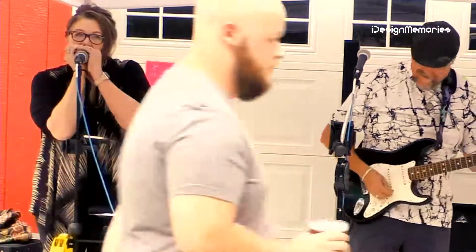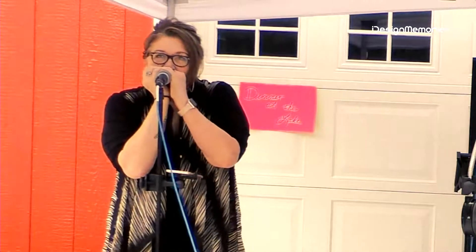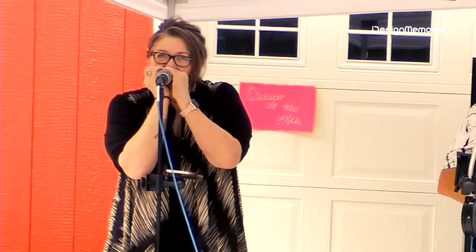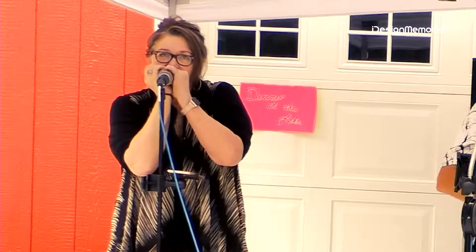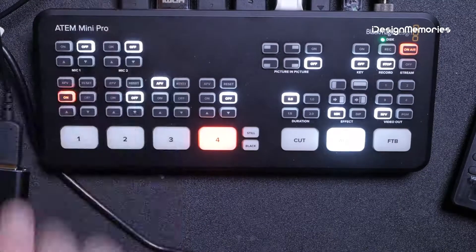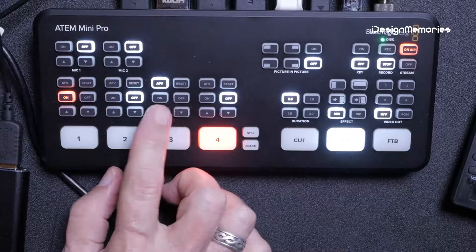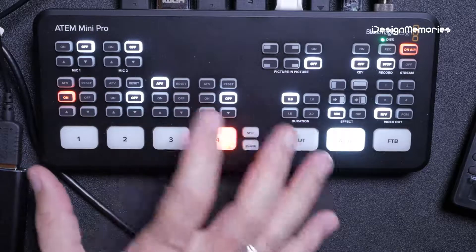You would think four inputs would be enough, but I'm tempted to pull the ATEM Mini back out of the box and use it. Here's camera four — an overhead view of the ATEM Mini. These are your volume buttons to turn volume up and down. Audio follows video means when I switch, it pulls the audio along with it, but when I switch away it gets rid of that audio.